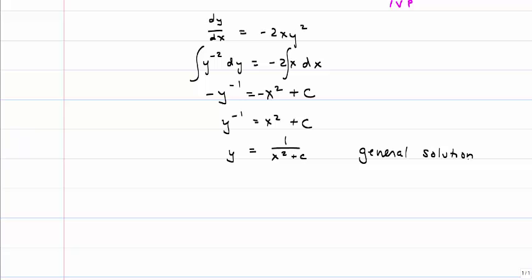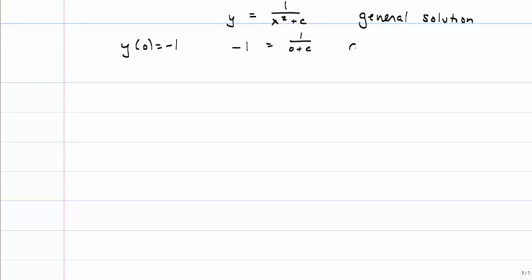What I'm going to do now is find my particular solution by using my initial condition, and I find that C is equal to negative 1, and so my particular solution is this.